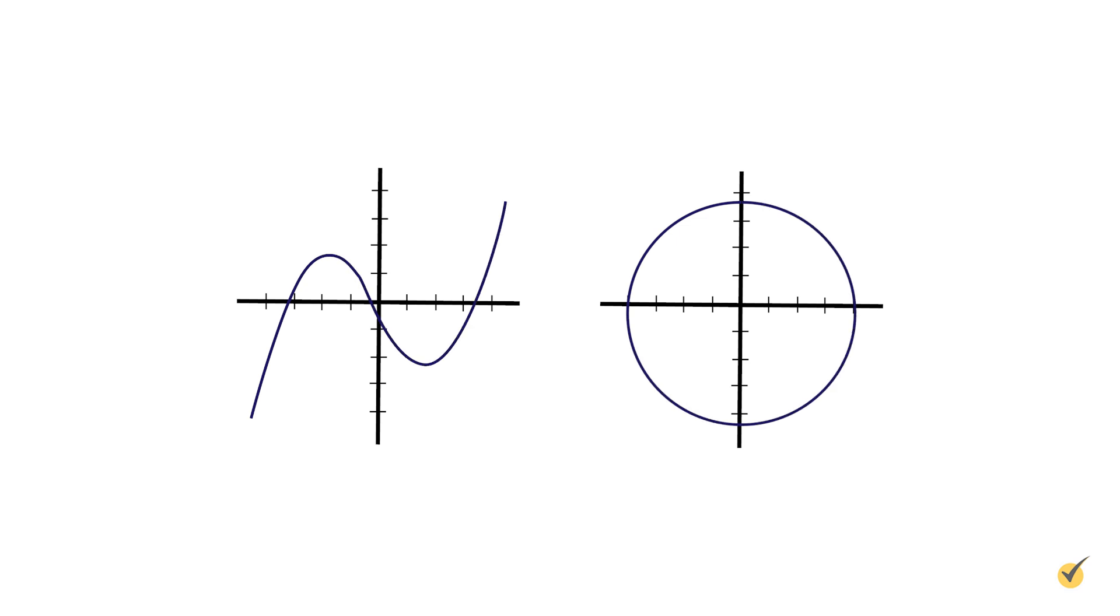Remember the vertical line test? Which one of these graphs passes that test if we were to draw a vertical line through it? The first graph here passes the test because the vertical line only passes through one point. In the second graph, the vertical line passes through two points, so it is not a function.